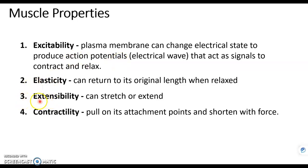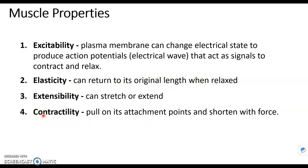Extensibility means that muscle tissue can be stretched. And after it's stretched, it has another property called elasticity, which means it can return to its original length. The final muscle property, unique to only muscle tissue, is contractility — meaning it can contract or shorten with force. These are the four properties you should know for muscle tissue.